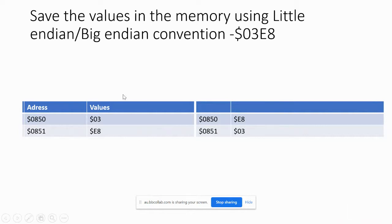The left-hand side is the little endian convention and the right-hand side is the big endian convention. Big endian stores the most significant byte in the higher-order memory address and the least significant byte in the lower-order address. When doing an exam, don't rush — observe the order of the memory first. The memory goes from lower order to higher order.